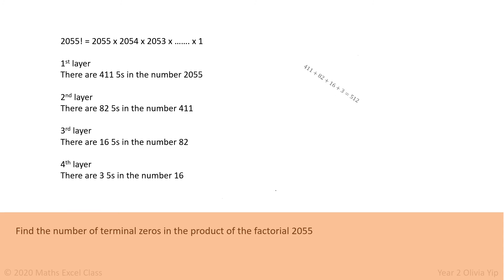So you add up 411 plus 82 plus 16 plus 3. Altogether that equals 512.